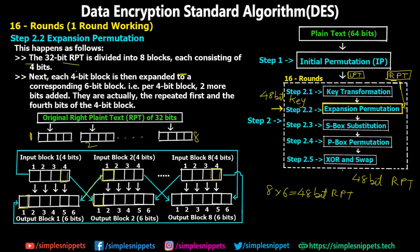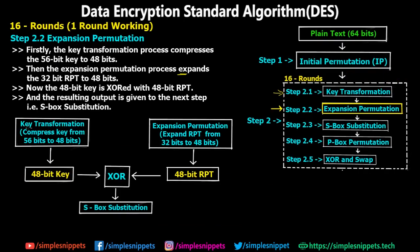From key transformation (step 2.1) we have a 48-bit key, and from expansion permutation (step 2.2) we have a 48-bit RPT. Before moving to S-box substitution, we perform an XOR operation between these two 48-bit values — the 48-bit key and the 48-bit RPT. The output of this XOR is then provided to the S-box substitution step.